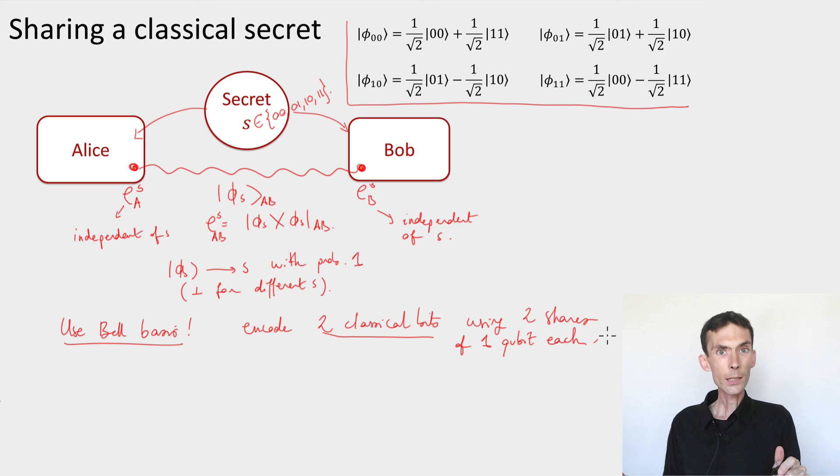It wouldn't let him get any information about the secret, but it would change it. And in some applications, such as bit commitment, which is an application that you'll see much later in the course, this is a problem. But it's an unavoidable problem, right? Because it's a consequence of Ullmann's theorem.